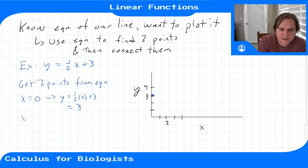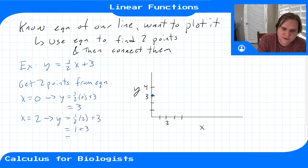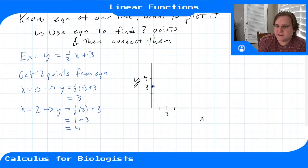And then when x is equal to, let's say, two. You just pick any x that you think the algebra will be easy for. And then we plug that in. We get a half times two plus 3. That gives us one plus three for four. And then we plot 2, 4.